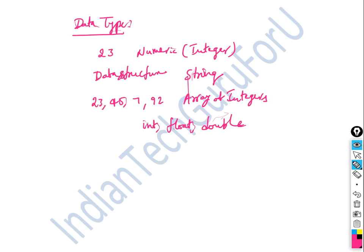Abstract data type. There are predefined data types defined by the language, such as int, float, and string. An abstract data type is user-defined. For example, student is an abstract data type, where its attributes are defined using primitive data types.